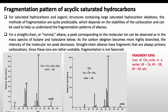As the carbon skeleton becomes more highly branched, as in the case of isobutane, the intensity of the molecular ion peak decreases. The straight chain alkane (butane) can only form primary carbocations after fragmentation, which are unstable, so fragmentation is not favored further. That's why we see a significantly more intense molecular ion peak for butane compared to isobutane.